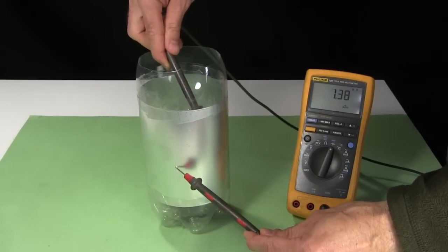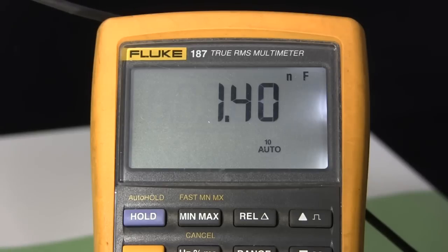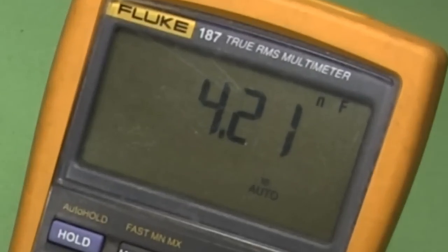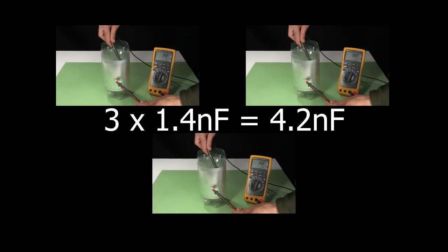Next I measure the capacitance. It's around 1.4 nanofarads or .0014 microfarads. For my Tesla coil, the commercially made capacitors added up to around 4.2 nanofarads. Which is perfect since just three of these soda bottle capacitors also add up to 4.2 nanofarads.